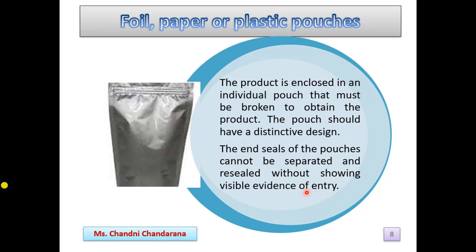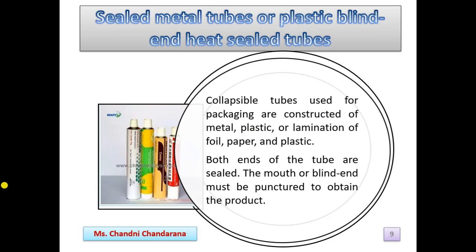The next is sealed metal tubes or plastic blind and heat-sealed tubes — these are collapsible tubes. They are used for packaging and are constructed of metal, plastic, or laminations of foil, paper, and plastic. Generally metal tubes are used for products requiring a high degree of barrier protection afforded by the metal. Both ends of the tube are sealed, and the mouth or blind end must be punctured to obtain the product.